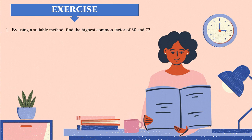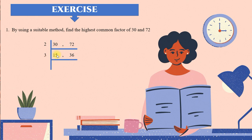Now I'll show you the answer. Find the highest common factor of 30 and 72 using algorithm. 30 and 72 can both divide by 2: 30 divided by 2 equals 15, and 72 divided by 2 equals 36. If we divide by 2 again, 15 cannot, so we divide by 3: 15 divided by 3 equals 5, and 36 divided by 3 equals 12. No more prime number can divide both — we cannot divide by 2, 3, or 5 across both numbers. So our HCF equals 2 times 3, which equals 6.